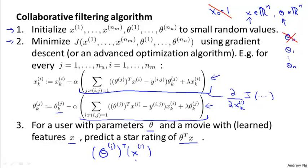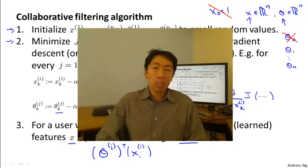That's the collaborative filtering algorithm. If you implement this algorithm, you actually get a pretty decent algorithm that will simultaneously learn good features for all the movies as well as learn parameters for all the users, and give pretty good predictions for how different users will rate movies they have not yet rated.